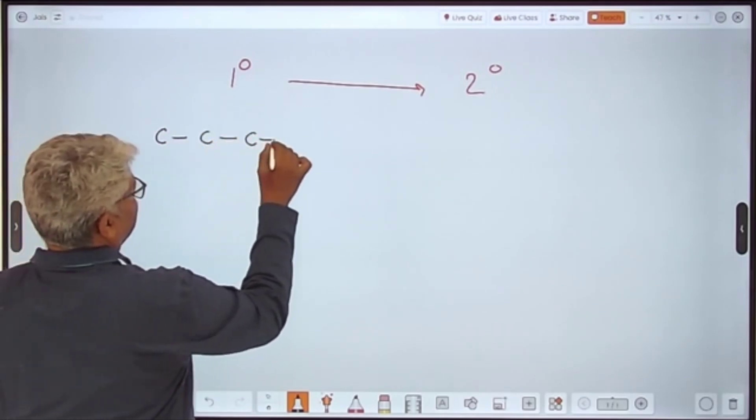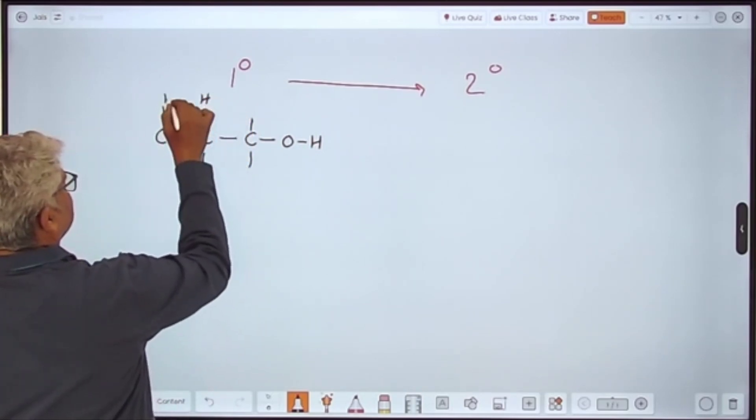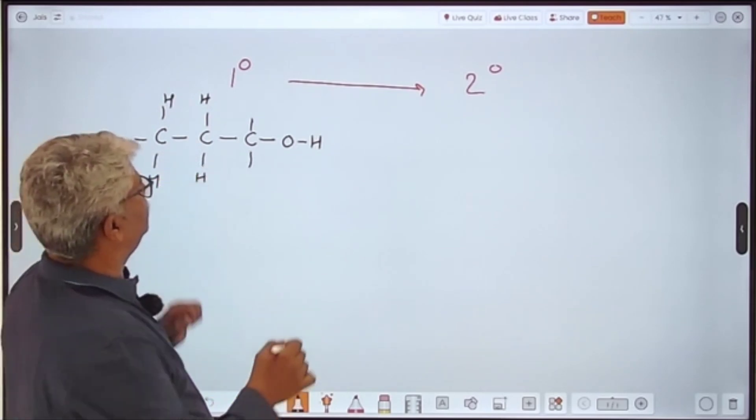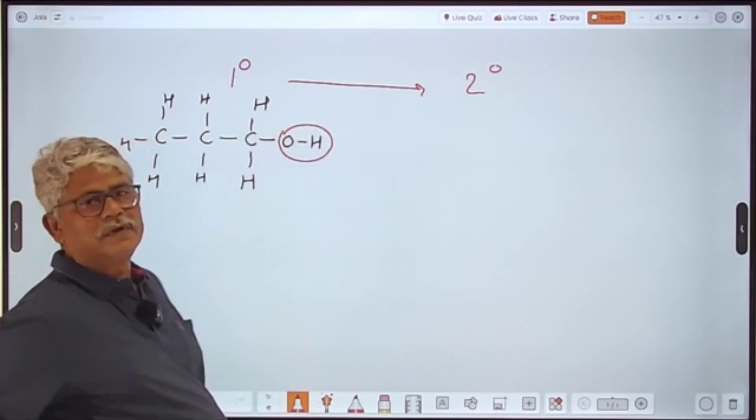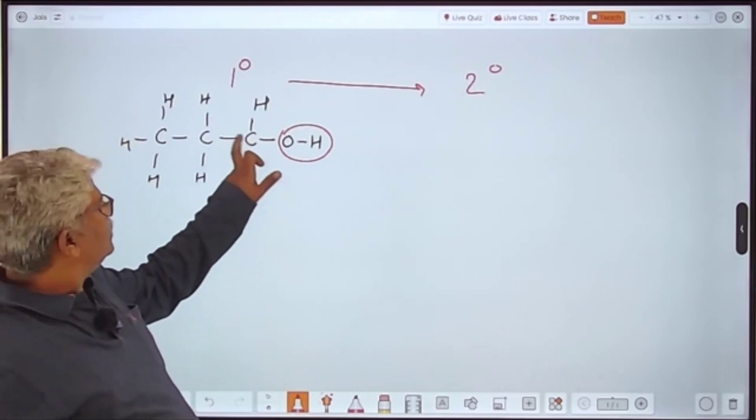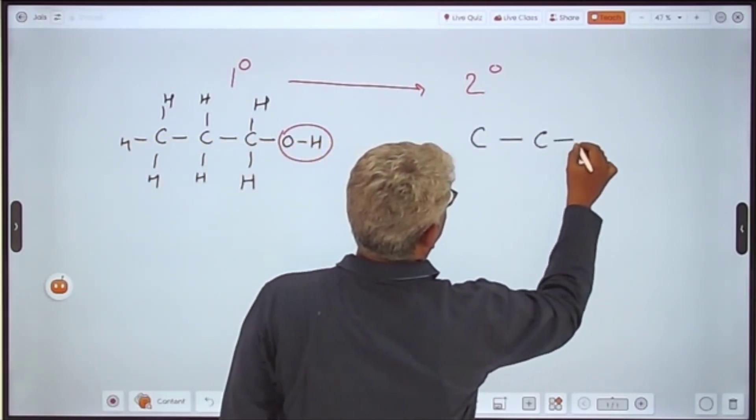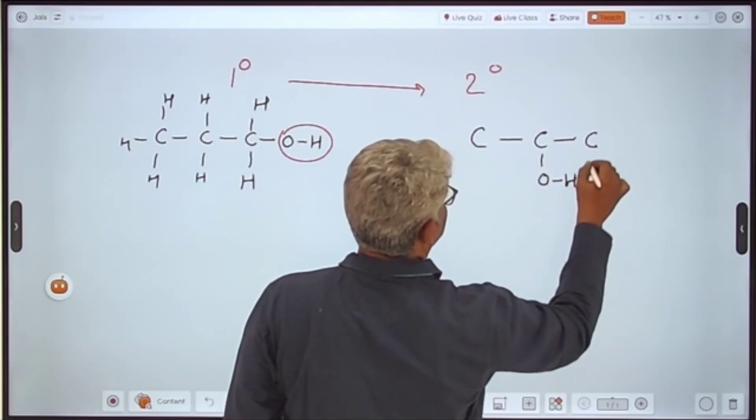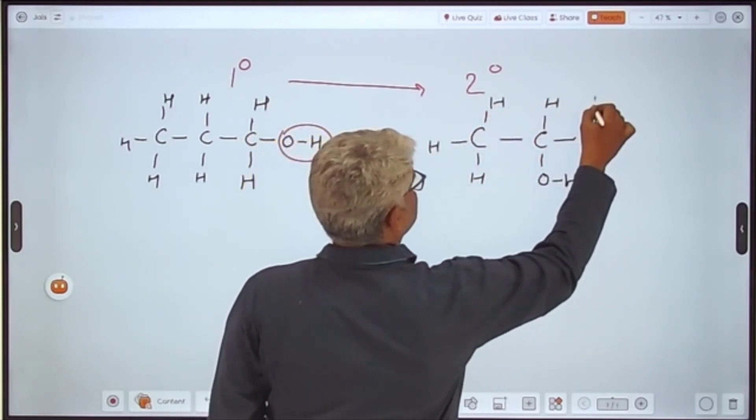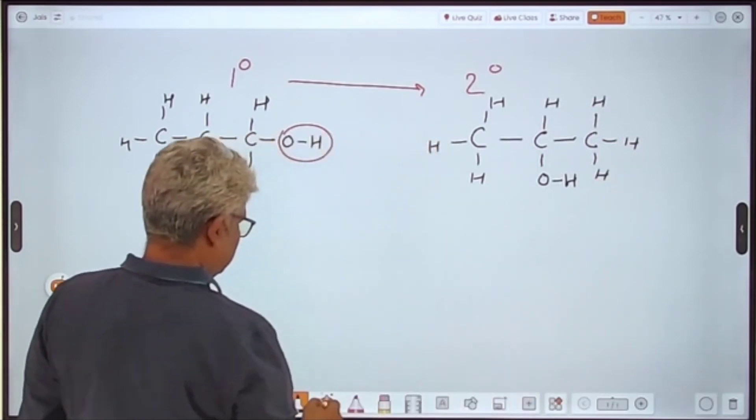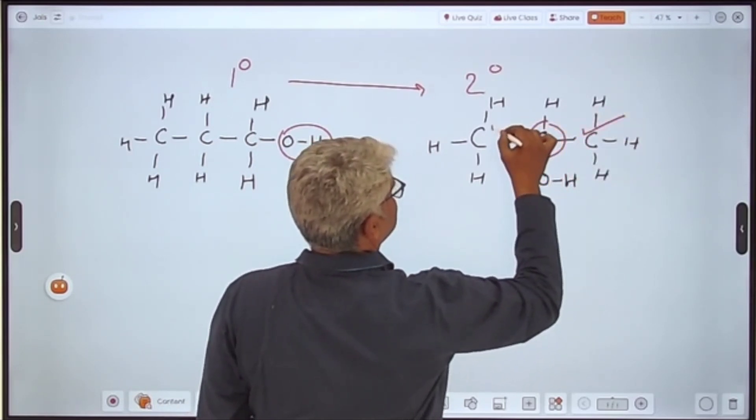One degree carbon is where the functional group is attached to that carbon which has either one carbon attached to it or it is alone. Now this is the functional group, and the carbon to which it is attached is attached to one more carbon. In this case, this is the functional group, the alcohol group, which is attached to that carbon which has two more carbons attached to it. You can see this is the carbon to which this carbon is attached and this carbon is attached.